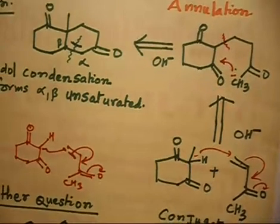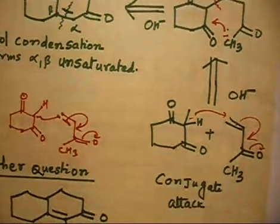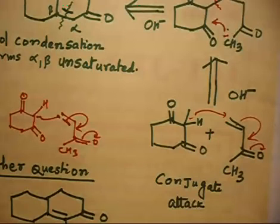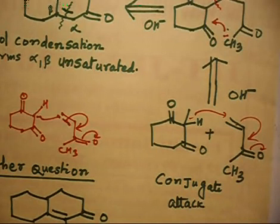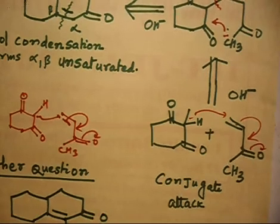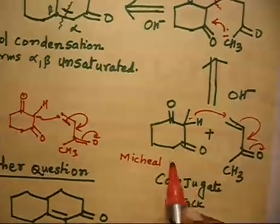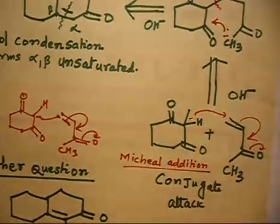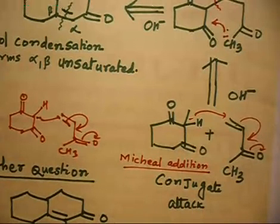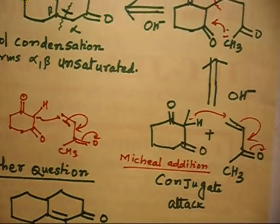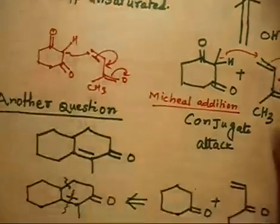Note that these attacks are conjugate attacks — this is a 1,4-addition, not a 1,2-addition. This kind of attack is called a conjugate attack, and this reaction is called Michael addition. Attack of a carbanion on an alpha-beta unsaturated compound in a 1,4-conjugate fashion is called Michael addition. If there is a 1,2-attack it is called direct addition; if there is a 1,4-attack it is called conjugate addition.